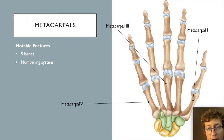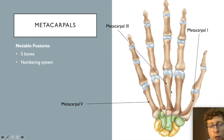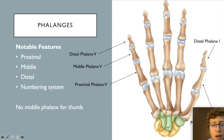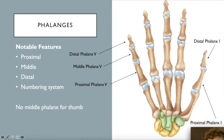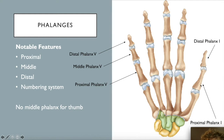The metacarpal naming system starts at the thumb: metacarpals one through five. The phalanges follow the same numbering. The thumb has only two phalanges — proximal phalanx number one and distal phalanx number one — while the remaining four fingers each have a proximal, middle, and distal phalanx.